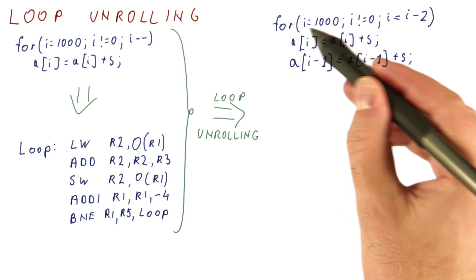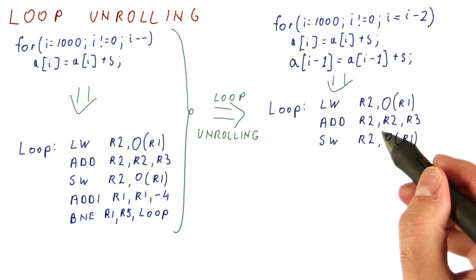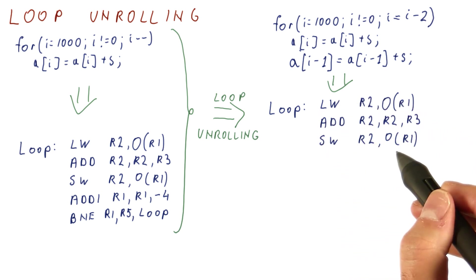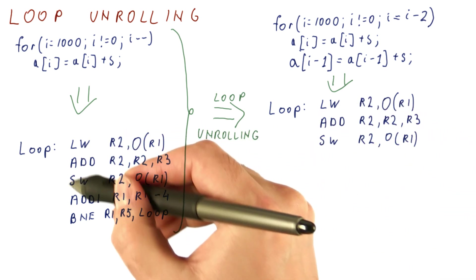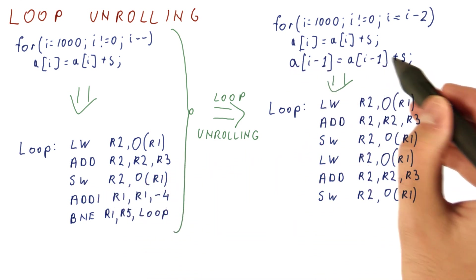For this once unrolled loop, the instructions would look like this. We would have the actual work of the one iteration. These are the same instructions as here. We now want to do this work once more. This would be this.